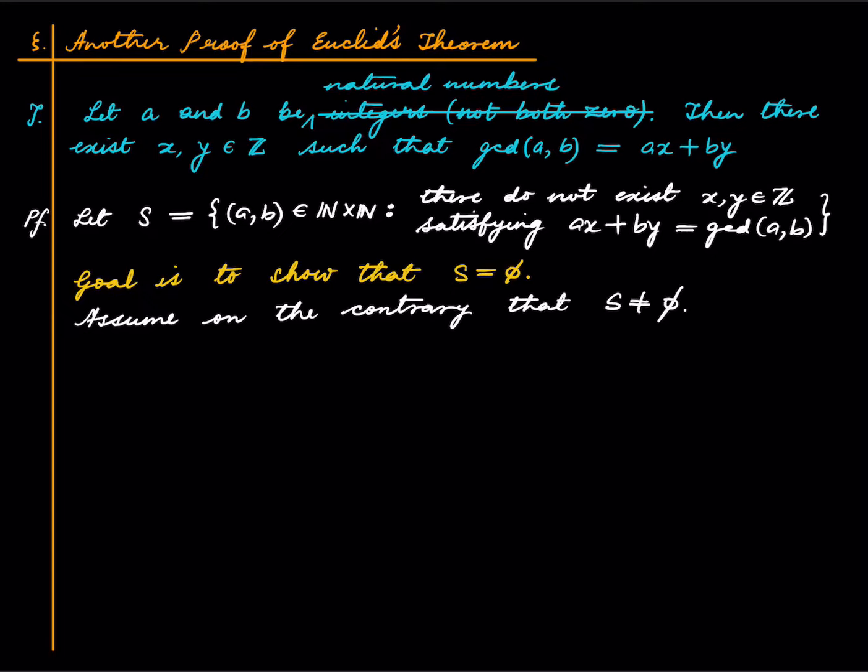Okay, and now define, since S is non-empty, we can define a function F from S to natural numbers which takes a pair to the sum. So this is just like we did for the alternate proof of division with remainder. Basically, again, I am repeating the thing. You can think of F as something that measures the size of an element of S.